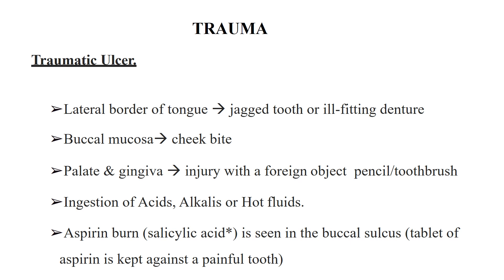Traumatic ulcers usually occur on the lateral border of the tongue due to a jagged tooth or ill-fitting denture, on the buccal mucosa due to cheek bite, and on the palate due to injury with a foreign object such as a pencil or toothbrush. Acute ulcerative lesions can also result from accidental ingestion of acids, alkalis, or hot fluids. Aspirin burns are also seen in the buccal sulcus when a tablet of aspirin is kept against a painful tooth to get relief from toothache.